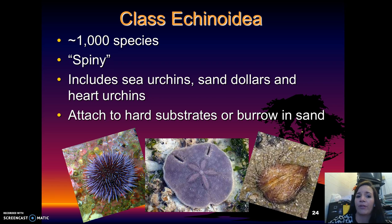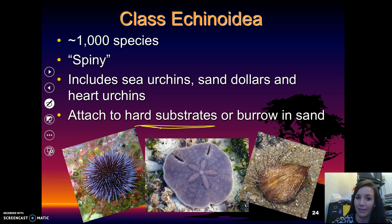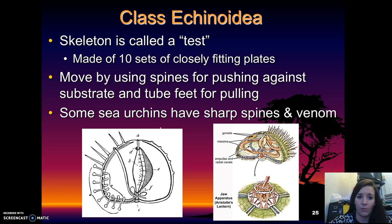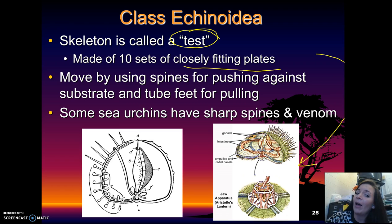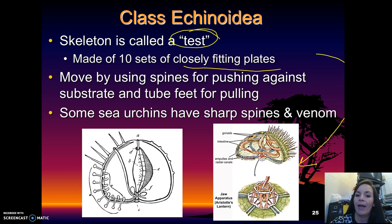The next class is Echinoidea. These have roughly 1,000 species and the name means 'spiny.' This includes sea urchins, sand dollars, and heart urchins. They attach to hard substrates and burrow in sand. In this class, the skeleton is called a test, made of 10 sets of closely fitting plates. They move using their spines pushing against the substrate while their tube feet are used for pulling. Some sea urchins also have sharp spines and venom, which can be painful if stepped on.